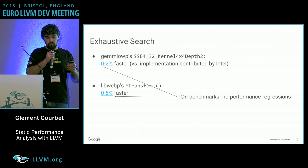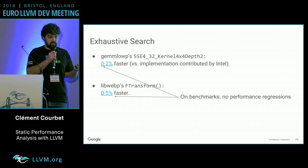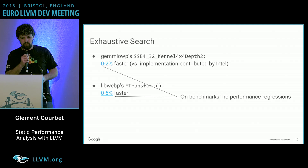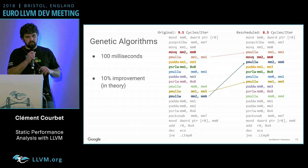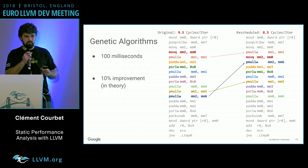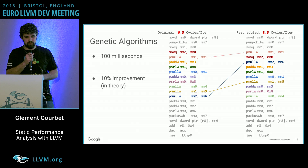Going back to my example at the beginning, we made gemloop 0 to 2% faster on actual benchmarks with no regressions, which is nice. We also worked on libwebp. The genetic algorithm makes things much faster — on this kernel you can get a 10% improvement by running the algorithm for about 100 milliseconds. That's still a lot slower than the heuristic-based post-RA scheduler, but it's way better.